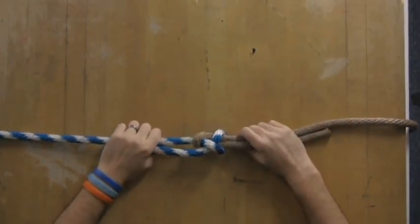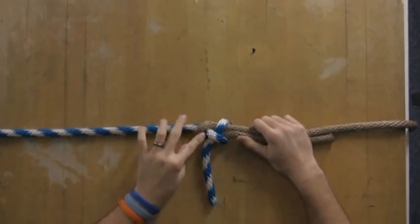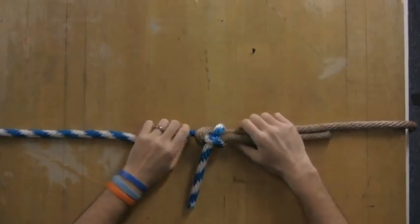Now this pulls together very similarly to what a square knot would be, but as you can see it doesn't go back through the loop and that's what creates a sheet bend.